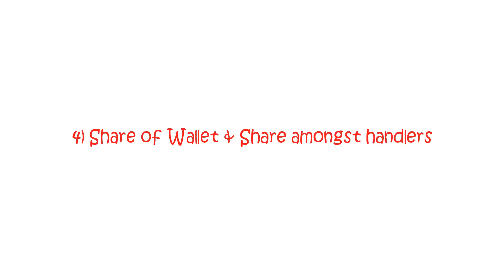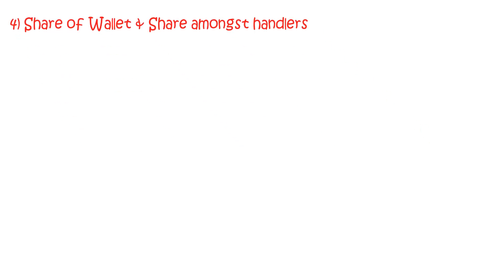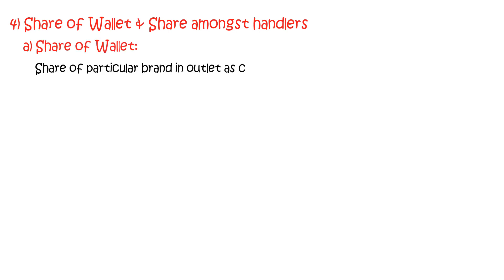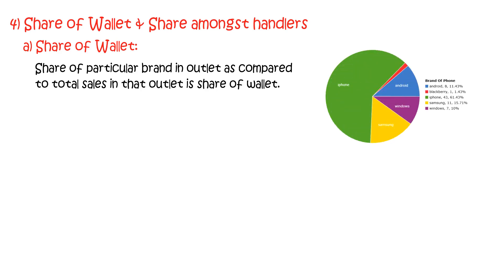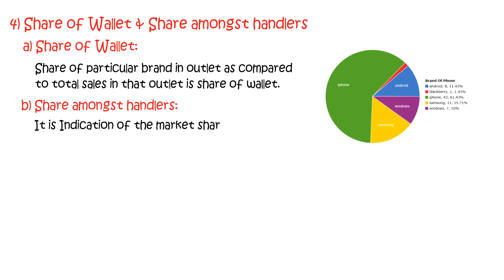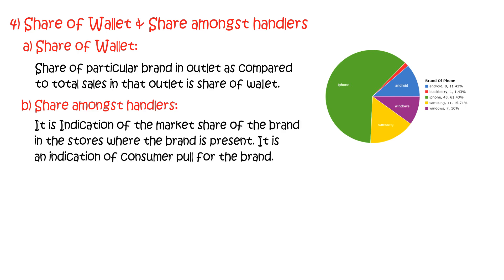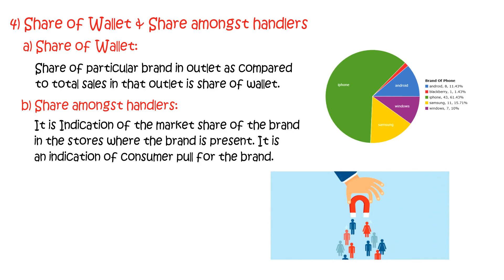The fourth technique is share of wallet and share amongst handlers. Share of wallet is the share of a particular brand in an outlet compared to total sales in that outlet. Share amongst handlers indicates the market share of the brand in stores where the brand is present, and is an indication of consumer pull for the brand.